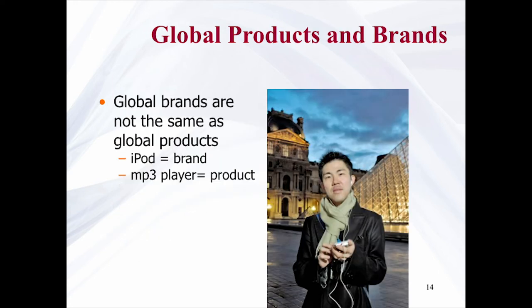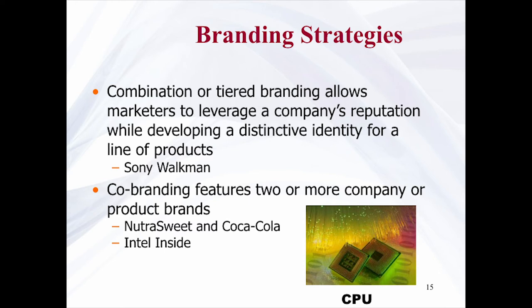Global brands are not the same as global products — for example, the iPod is a brand whereas an MP3 player is a product. Regarding brand strategies, combination or tiered branding allows marketers to leverage a company's reputation while developing a distinctive identity for a product line, such as Sony's Walkman. Co-branding features two or more companies or product brands, for example Intel Inside. Properly implemented, co-branding can foster consumer loyalty and achieve synergy; however, it can also confuse consumers and dilute brand equity. Credit card companies were the pioneers, and today cards can earn frequent flyer miles and discounts on automobiles.